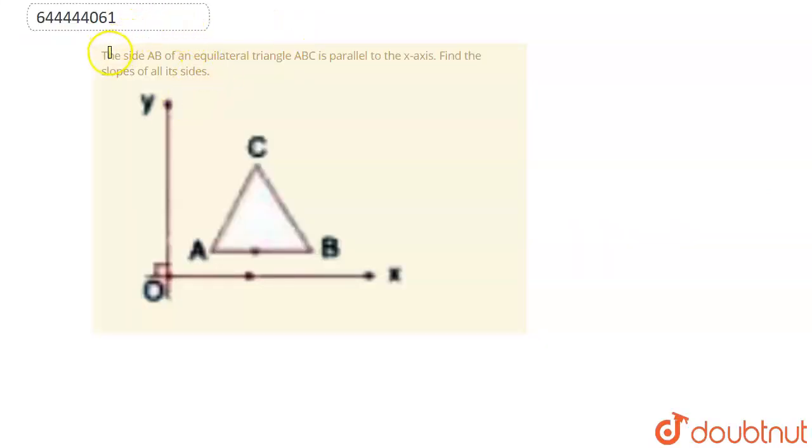We are given here the question that side AB of equilateral triangle ABC is parallel to X axis. Find the slope of all the other sides. So we have to find slope of all sides, that is slope of line AB, AC and BC.